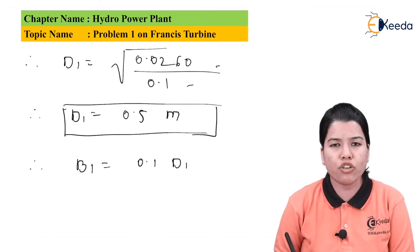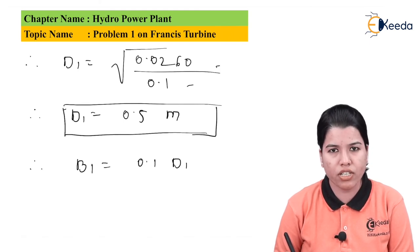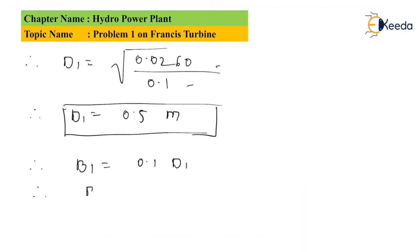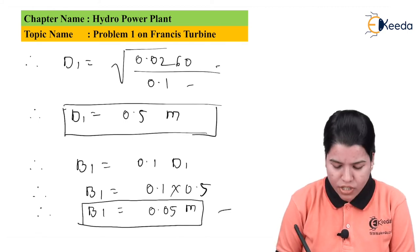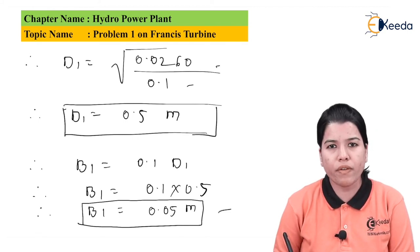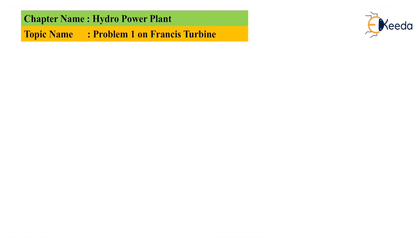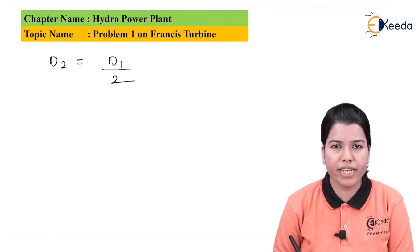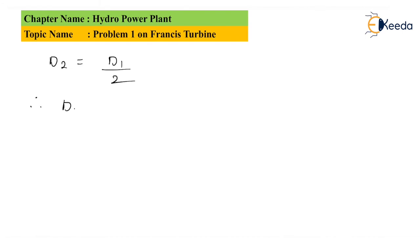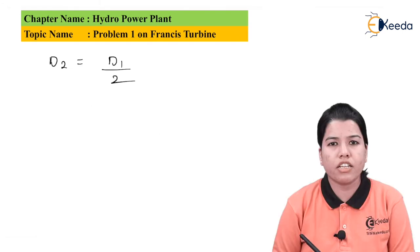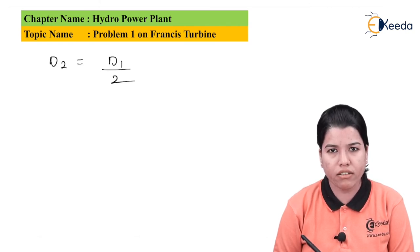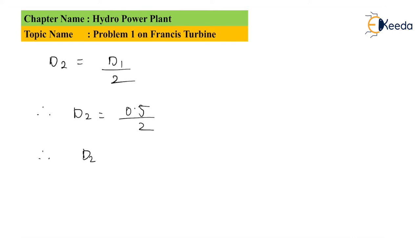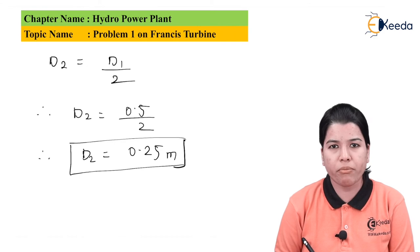B1 = 0.1 × D1 = 0.1 × 0.5 = 0.05 meter. Similarly, since the outer diameter is twice the inner diameter, D2 = D1 ÷ 2 = 0.5 ÷ 2 = 0.25 meter.